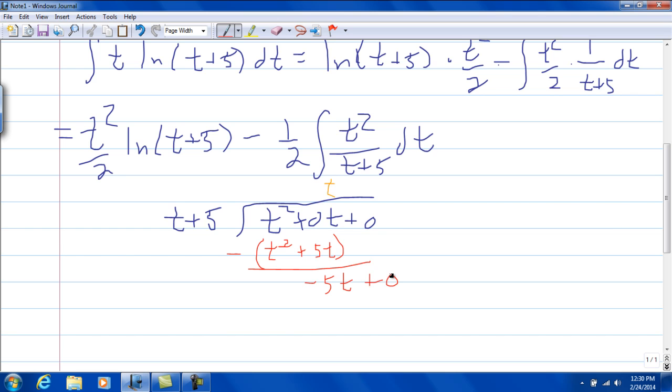t times what is negative 5t? It's going to be negative 5. So negative 5 times t is negative 5t, negative 5 times 5 is negative 25.